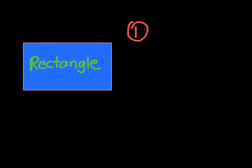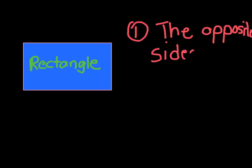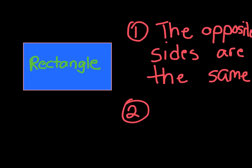Our next shape is going to be a rectangle — a blue rectangle. Just like the square, this has a few rules. The first rule is that the two opposite sides are exactly the same.